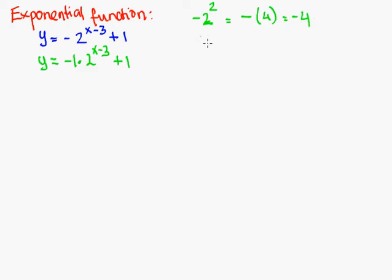2 squared is worth 4 and then I need to make it a negative. So that's actually a negative 4. Don't confuse that with this. A negative 2 squared means that you're squaring the negative. That's the difference between the two expressions.